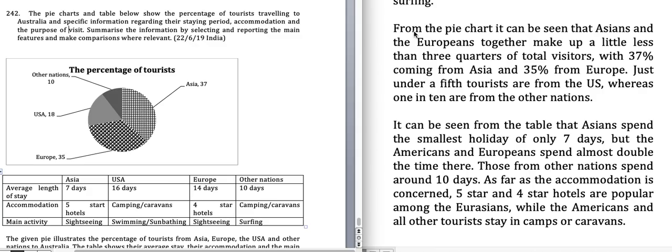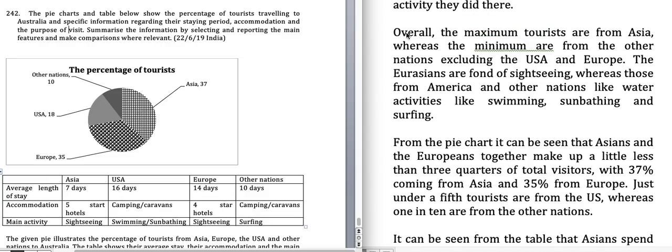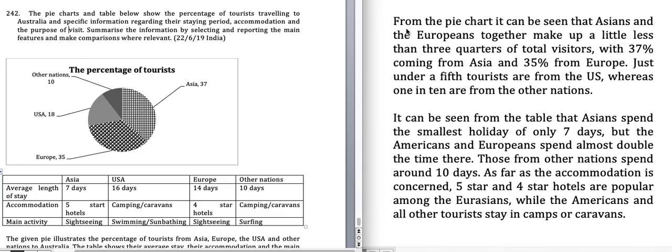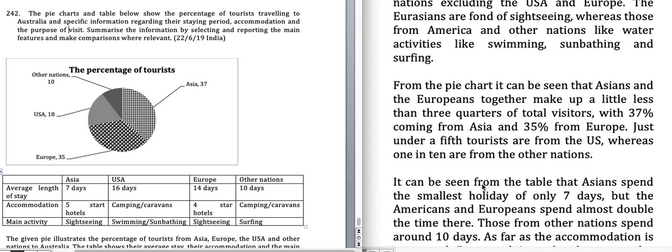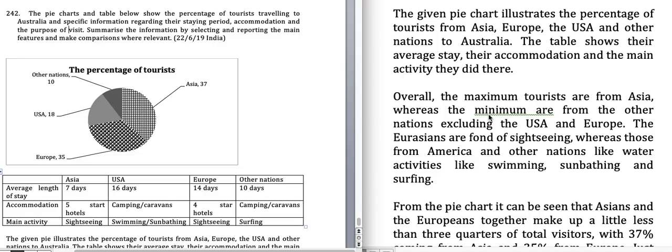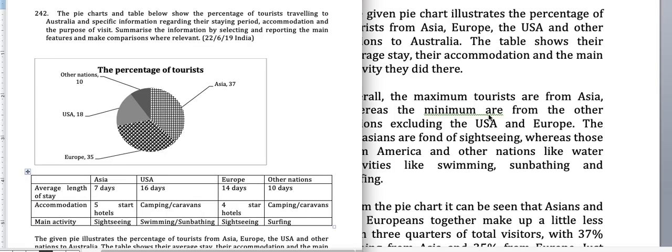This response has made up almost 190 words, which is pretty much okay. There is no data in the overview — data is only in the body paragraphs. One paragraph is for the pie chart and one for the table, with no repetition. Comparison words like 'maximum' and 'minimum' have been used throughout.